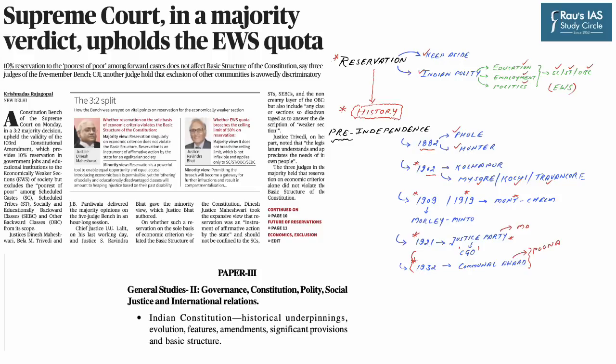The inspiration for our first discussion comes from this news which featured in The Hindu on page number one. The Supreme Court by a majority of 3 to 2 has upheld the constitutional validity of the Constitution's 103rd Amendment Act of 2019, which provides for 10% reservation to the Economically Weaker Section (EWS) in admission to educational institutions and government jobs, and held it does not violate the basic structure of the Constitution.